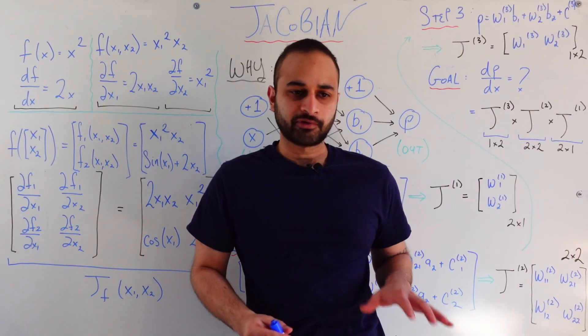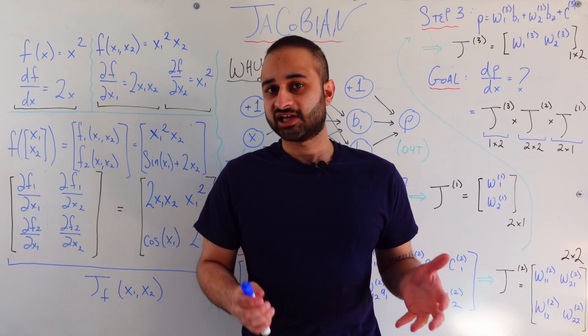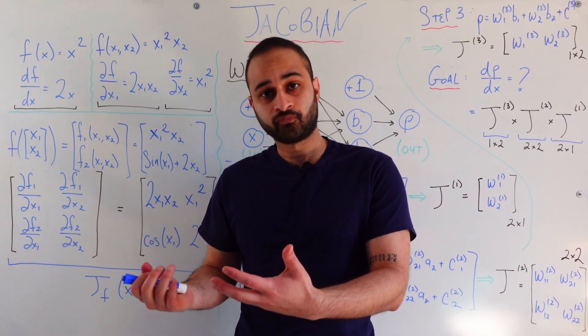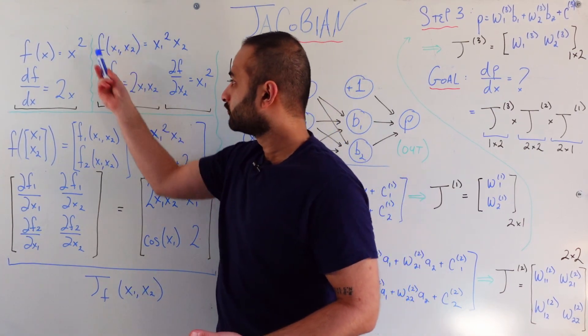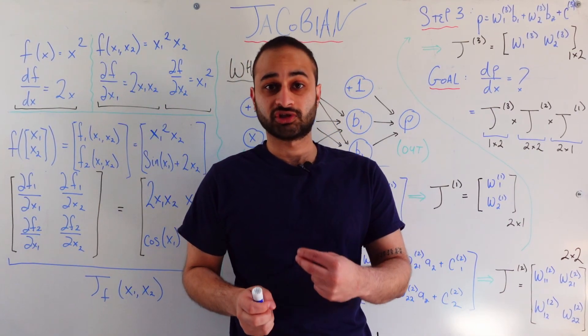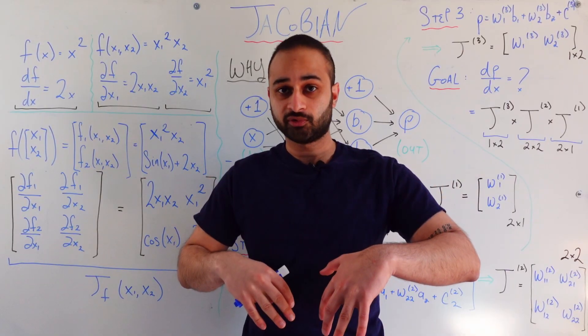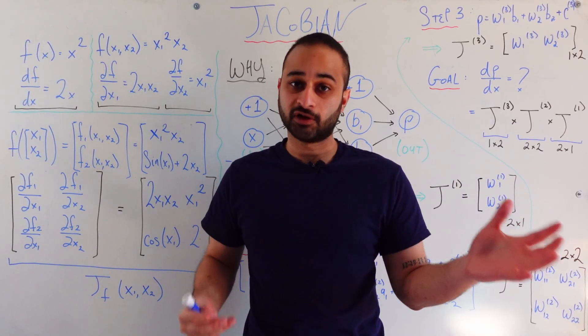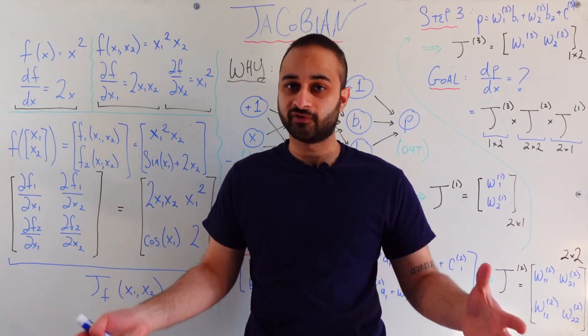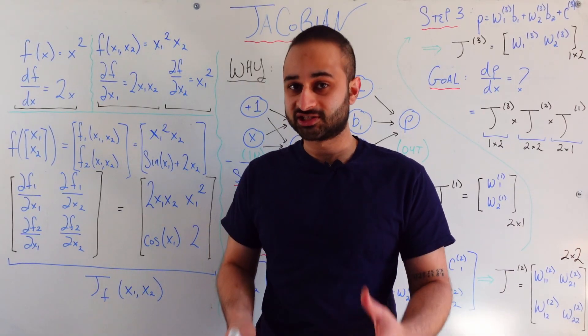So still nothing too crazy going on. Now the Jacobian all it does is just extend this one level further. Because what we saw here, we still had one function total, it's just that that function was now inputting several variables. Now the Jacobian asks, what if we have several functions, each of which is a function of different variables? So here's an explicit example of that.